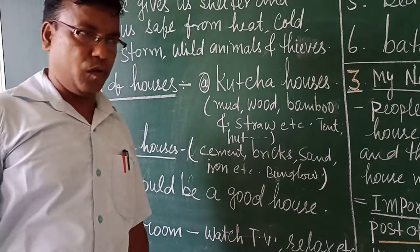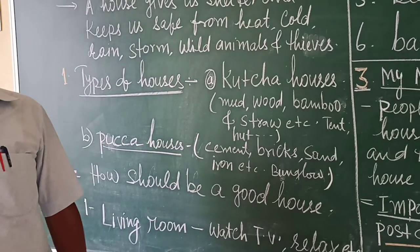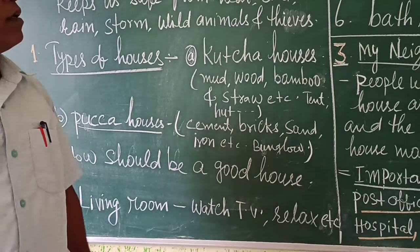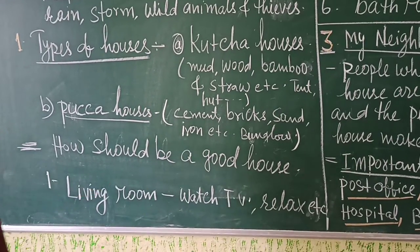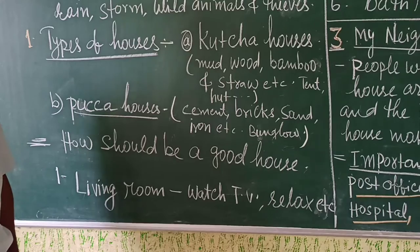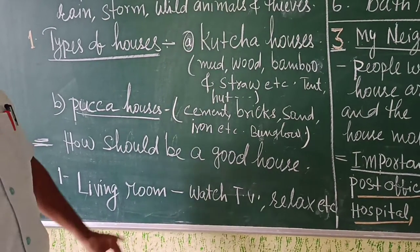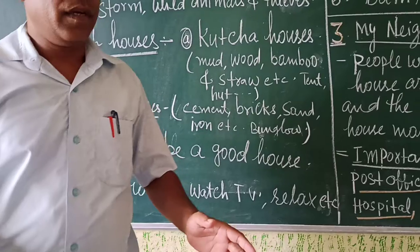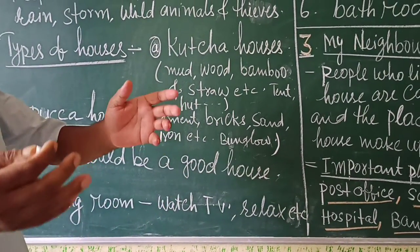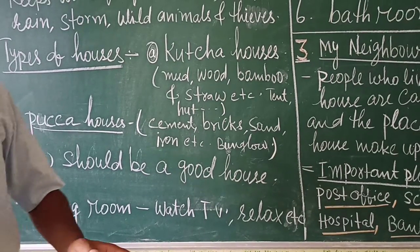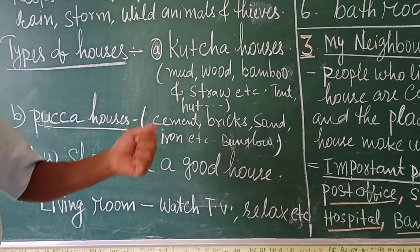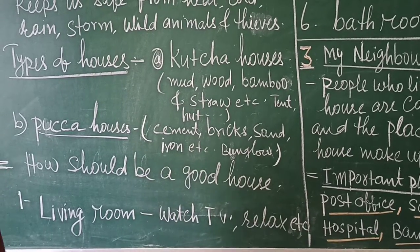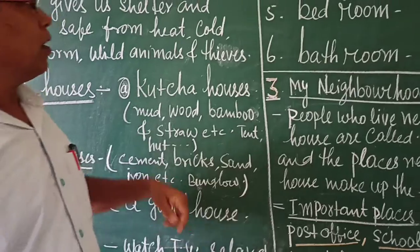How should a good house be? A good house has many rooms. The first room is the living room. The living room is a separate room where chairs, sofa chairs and a TV are kept. Whenever people feel bored they come to the living room, sit there, watch TV and relax. This is called a living room.